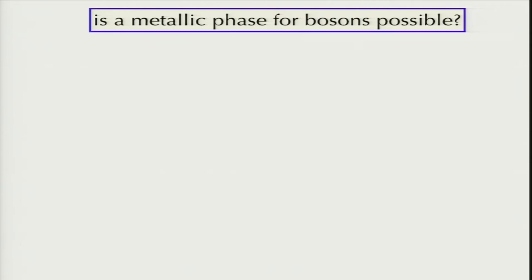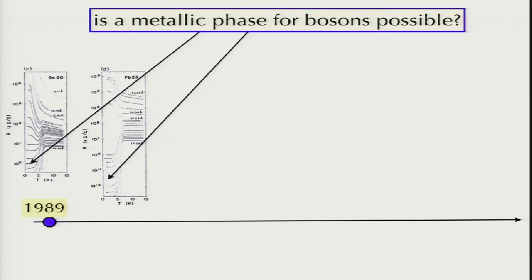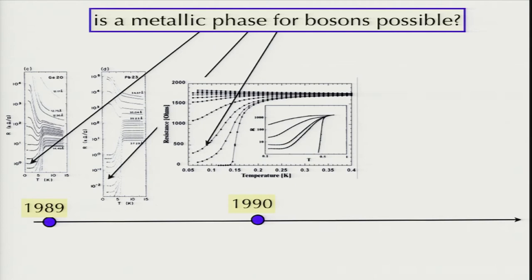So is a metallic phase for bosons possible? If it's not h over 4e², it means bosons can have any particular value. In 1989, it was reported that as you decrease the thickness of the sample — making it less disordered — some of the resistivity curves which were vanishing started to plateau. This persisted. This is Alan Goldman's data in 1989, and also from the Kapitulnik group at Stanford — several PhD theses were written on this work.